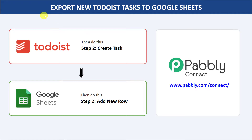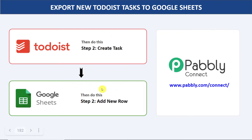Hello everyone. In this video we will learn how to automatically export new Todoist tasks to Google Sheets. The idea is that if a new Todoist task is created, a new row will be added into Google Sheets automatically. Since there is no direct connection between Todoist and Google Sheets, I will be using an integration and automation software called Pabbly Connect. The best part is that a person without any technical background can perform this integration easily.